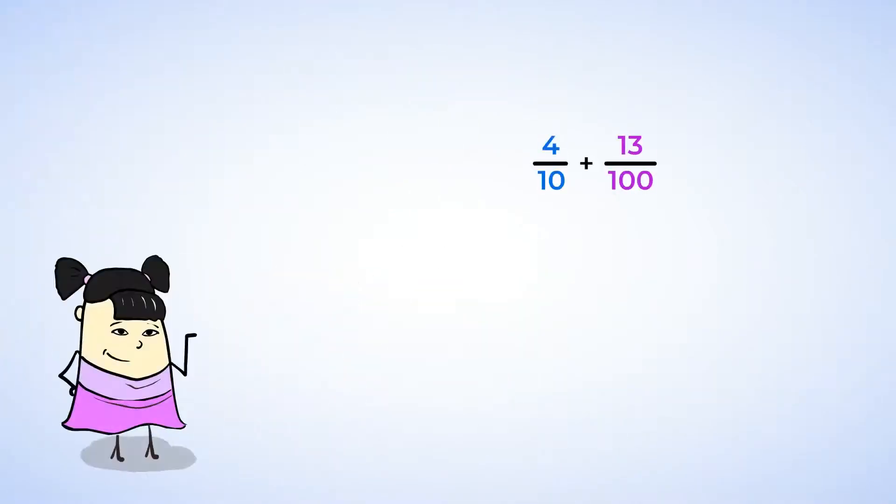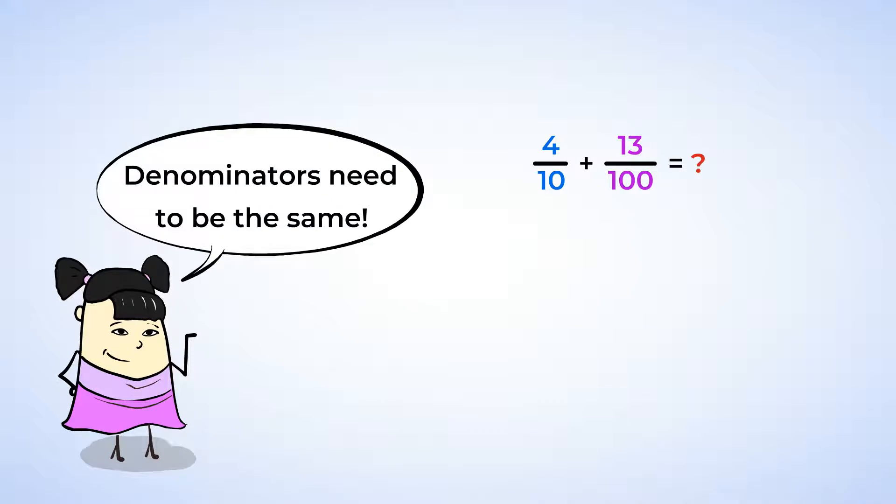Now here we have an addition problem: 4 tenths plus 13 hundredths. Now before we can add fractions, there's one step that's missing. Exactly! The denominators need to be the same. We need to multiply the tenths by 10 to become hundredths. So let's do it!